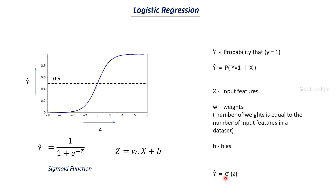Y-hat equals sigma(z), where sigma is just a short form for the sigmoid function given by the equation 1/(1+e^{-z}). This is analogous to writing y = f(x), meaning y is a function dependent on x. So y-hat = sigma(z) means y-hat is the output of the sigmoid function applied to z. Y-hat is the value we are trying to predict, lying between 0 and 1, and it represents a probability.